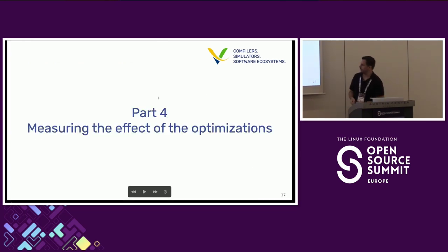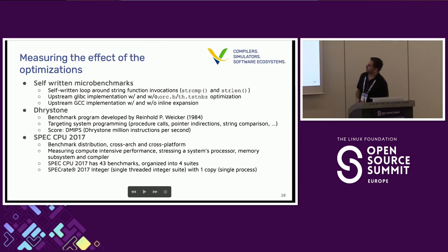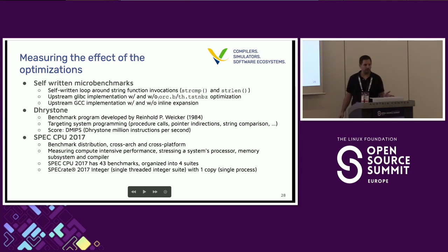Let's look at the effect of the optimizations. I have three test scenarios: self-written micro benchmarks, the Dhrystone benchmark, and SPEC CPU 2017. The test systems are real hardware: on the left, the StarFive VisionFive 2 with a SiFive core (supporting ZBB), and on the right, the Scaleway RV1 with a T-Head core (supporting XTHeadBB).